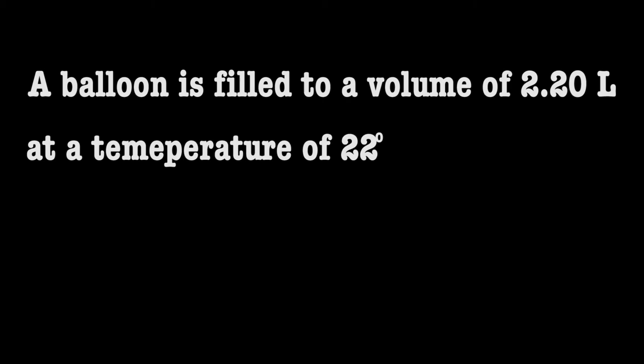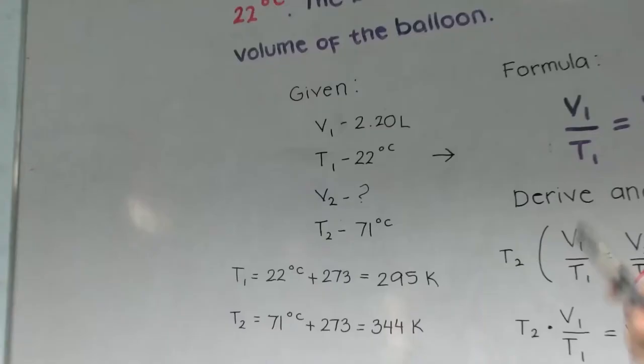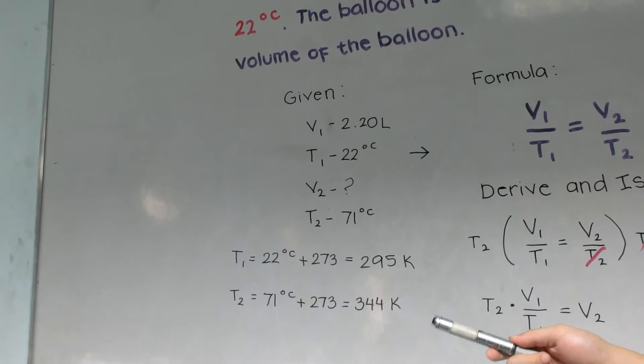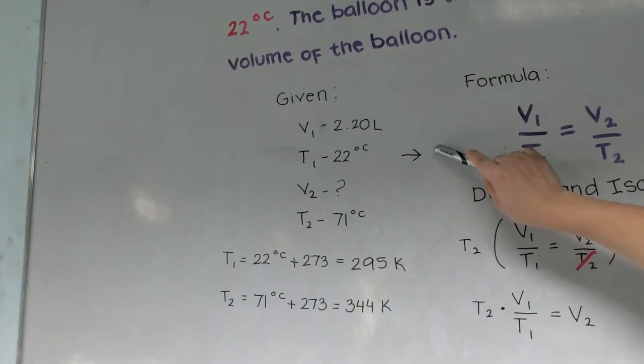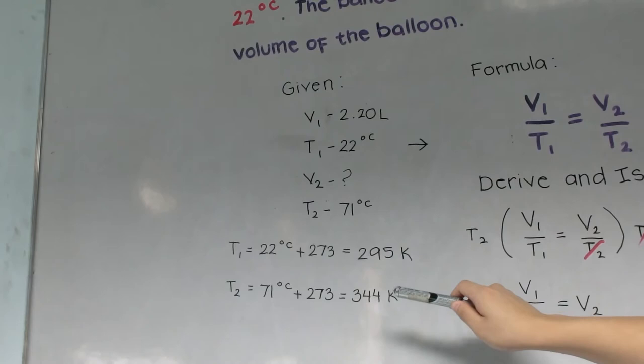Here's an example problem. A balloon is filled to a volume of 2.20 liters at a temperature of 22 degrees Celsius. The balloon is then heated to a temperature of 71 degrees Celsius. Find the new volume of the balloon. First, we identify the given values: V1 is 2.20 liters, T1 is 22 degrees Celsius, and T2 is 71 degrees Celsius. We are looking for the final volume V2. Both temperatures must be converted to Kelvin by adding 273, which gives us 295 Kelvin and 344 Kelvin.